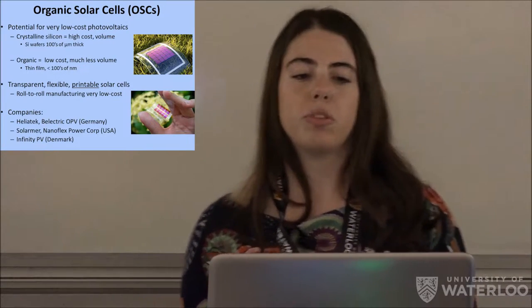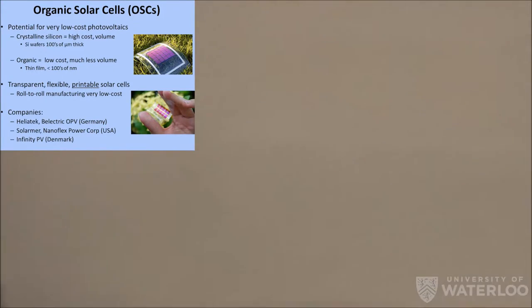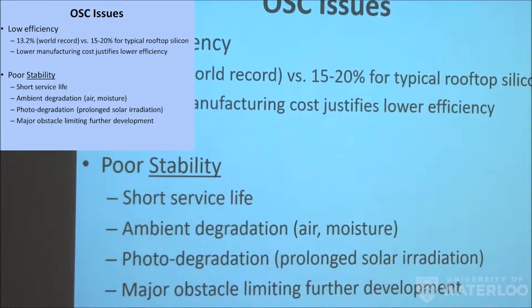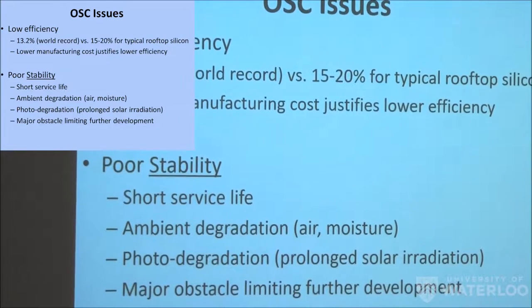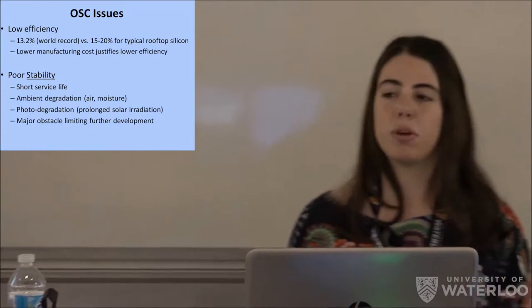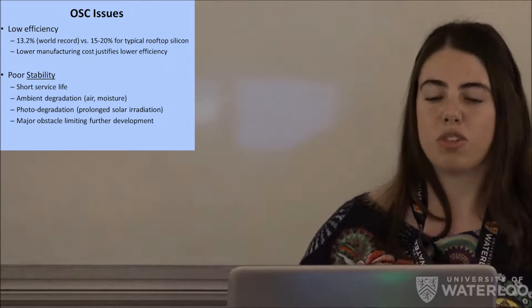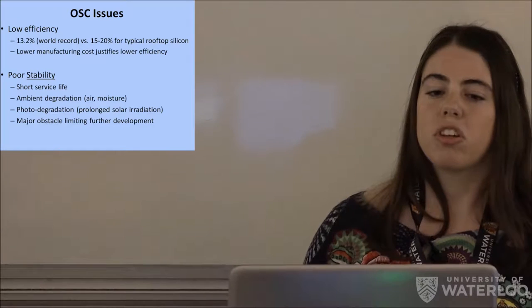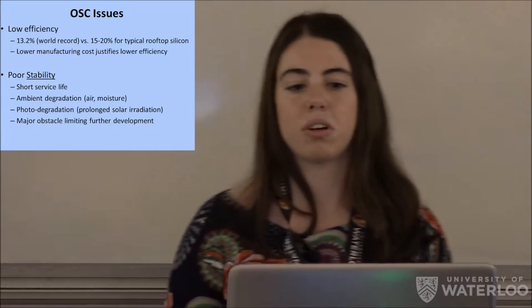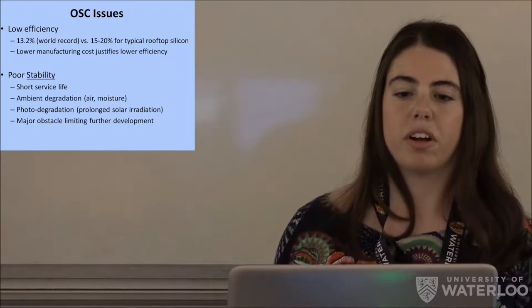There are, however, a couple of issues limiting organic solar cell development. The first one that typically comes to mind is low efficiency. So the current world record efficiency for organic solar cells is about 13.2 percent and that was actually set by Heliotech. However, your rooftop silicon everyday solar cell, that's about 15 to 20 percent efficient. That's not even state of the art. So you can imagine that there's a bit of a gap here. However, that's being bridged. And remember that to manufacture an organic solar cell is a lot cheaper than for a silicon solar cell. So that kind of somewhat justifies the lower efficiency.